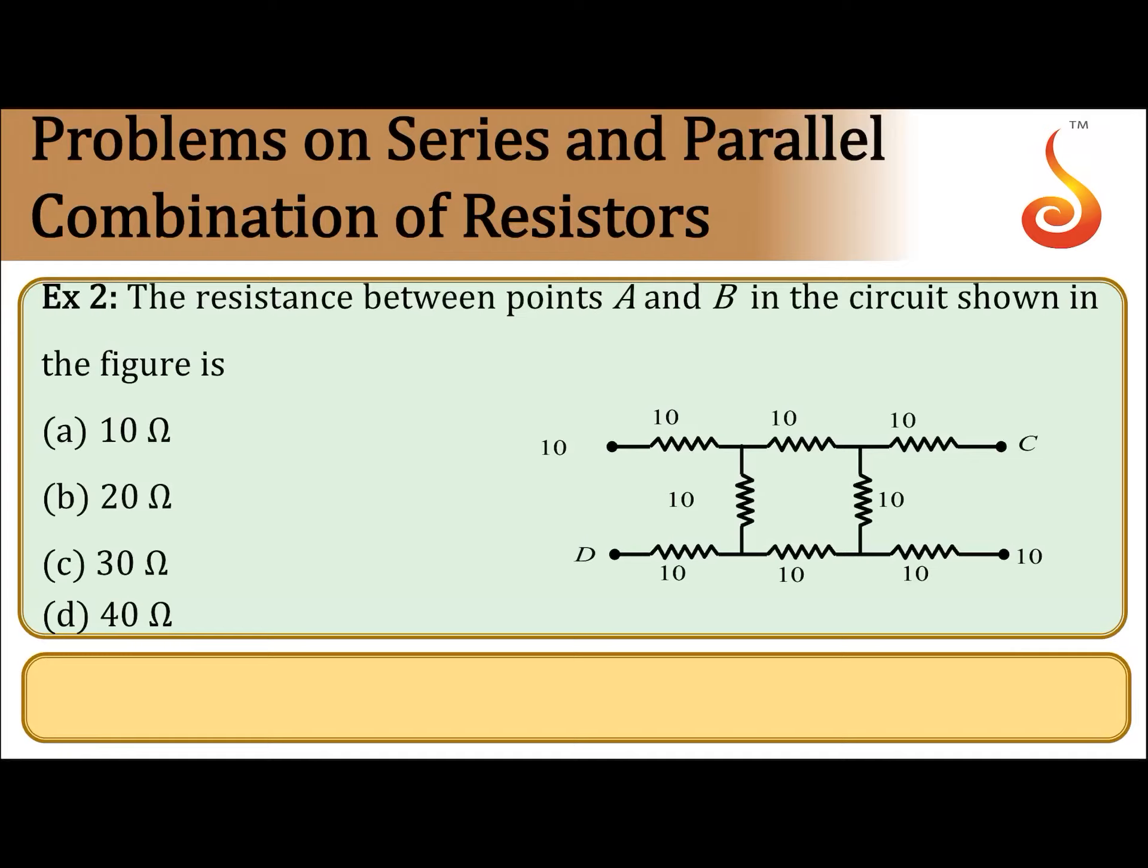Example number 2: The resistance between points A and B in the circuit shown in the figure is—options are 10 ohm, 20 ohm, 30 ohm, 40 ohm.